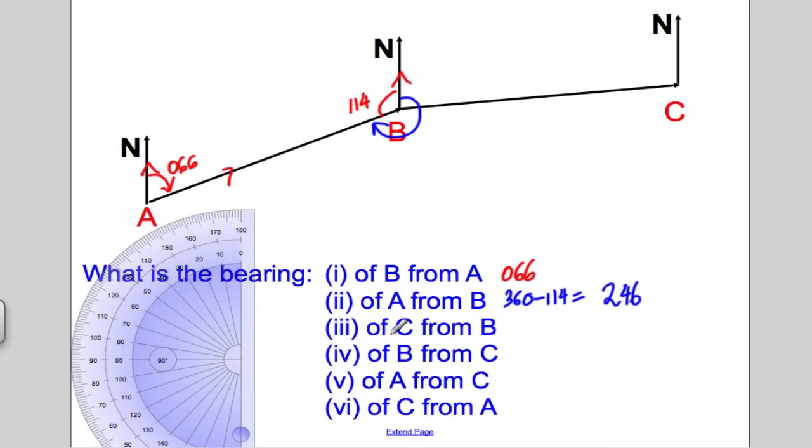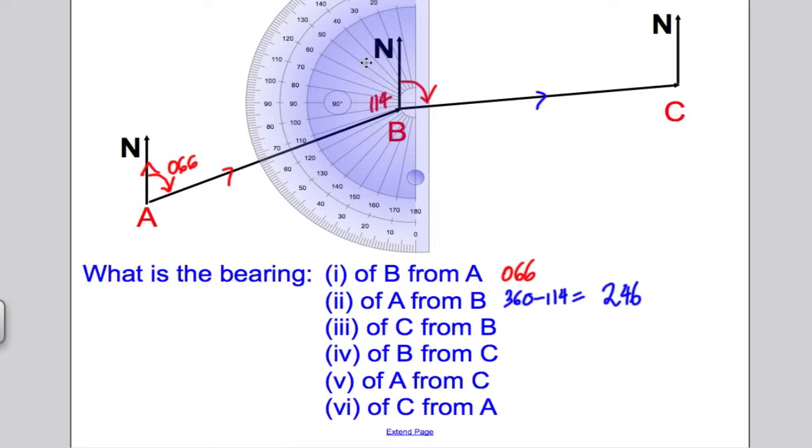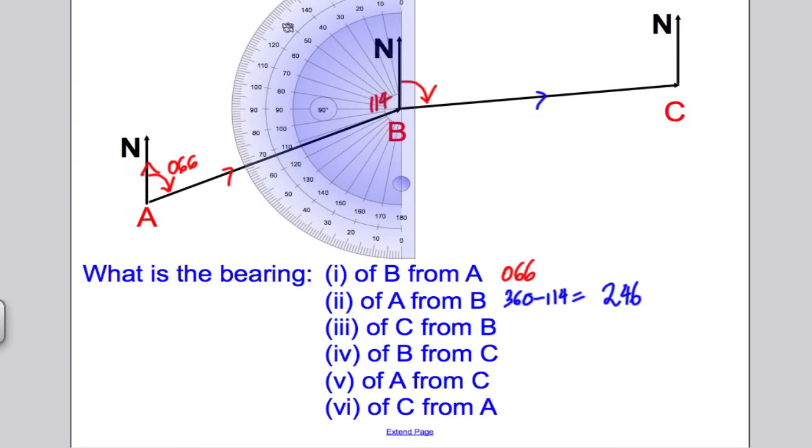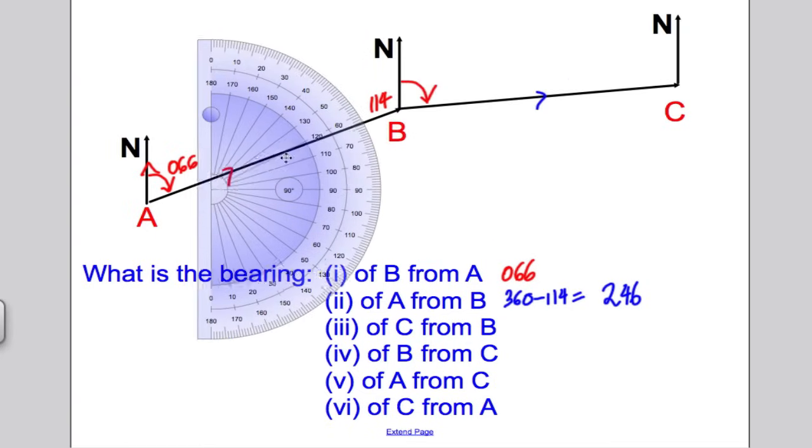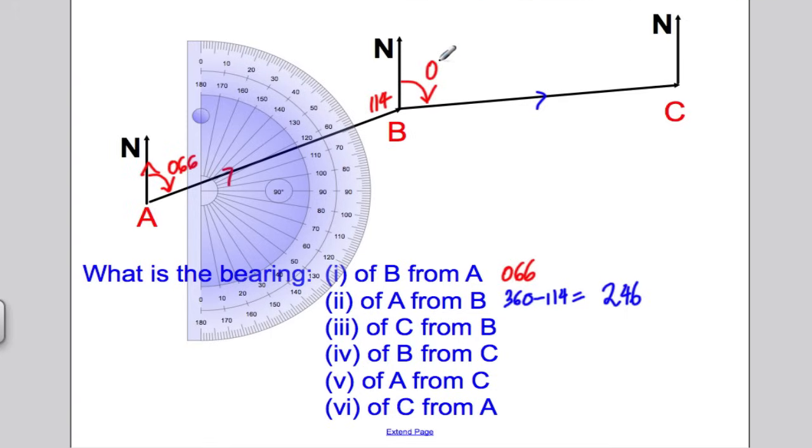Now, it says, measure the bearing of C from B. So, you're starting at B now, and you're going towards C. So, what they want, I'm just going to rub this out for now. Remember, that was 114. It's there. They want this angle here. Again, protractor out, put it at the 0 point here, twist it round. The 0 is on the outside here. It looks to me like it's about 85 exactly. So, this is 85, but we write 085. So, the answer for this is 085.